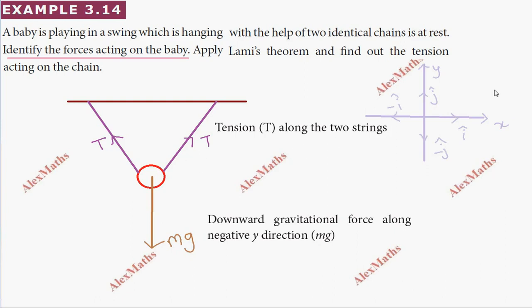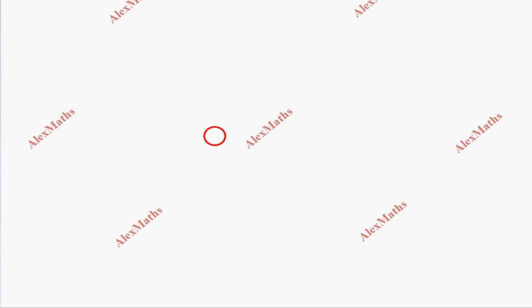Now drawing the free body diagram, the baby is treated as a point object. The baby has a mass M, a weight MG from gravitational pull acting towards the ground in the downward direction, and tension T acting along the strings upward. So you have the direction of the body and the tension T1 and T2.